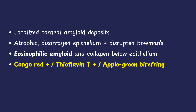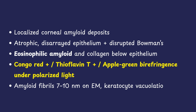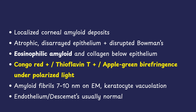Under polarized light after staining with Congo red, it shows the classic apple green birefringence, which is a favorite examination question. On electron microscopy, you may see 7 to 10 nanometer amyloid fibrils along with keratocyte vacuolization.